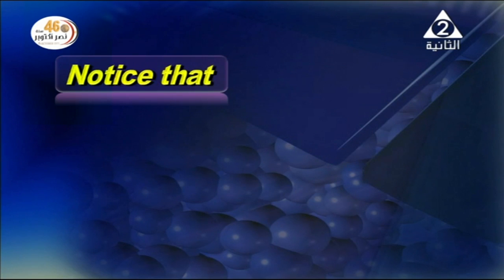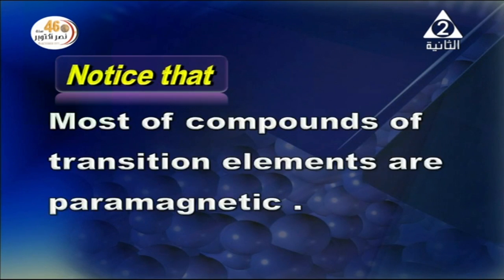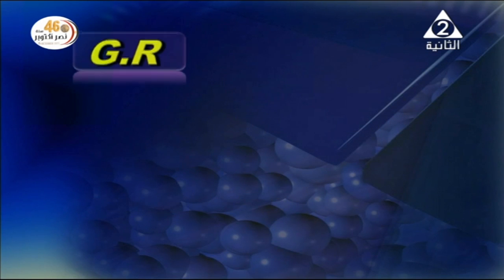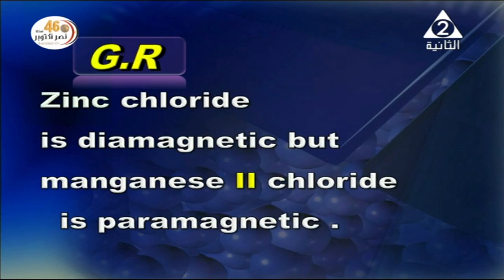Notice that most compounds of transition elements are paramagnetic, as they have unpaired electrons in the D sub-level. For example, zinc chloride is diamagnetic but manganese(2) chloride is paramagnetic.